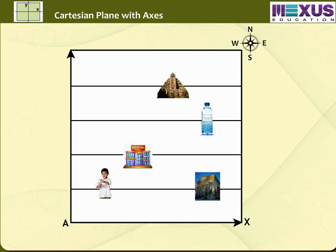So to get rid of this confusion let us now draw the vertical lines with a distance of one unit from each other in the map. Let the leftmost vertical line be AY, then it will look as shown. Now with the help of both the horizontal and vertical lines we can locate the given objects.